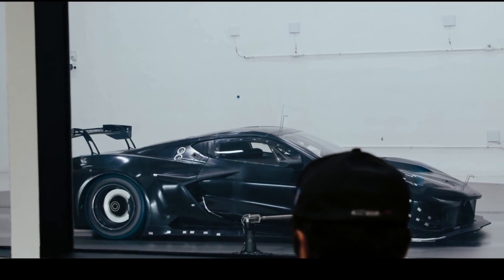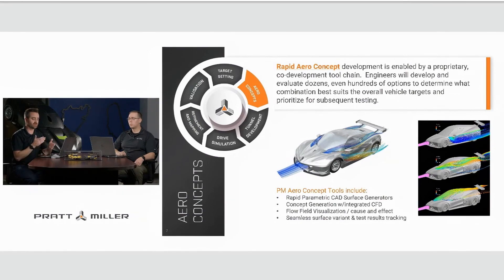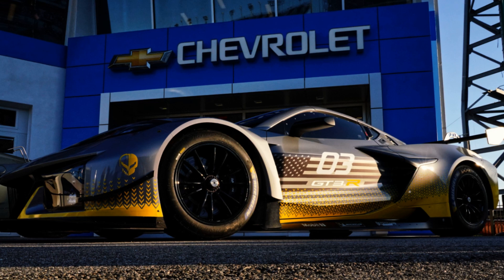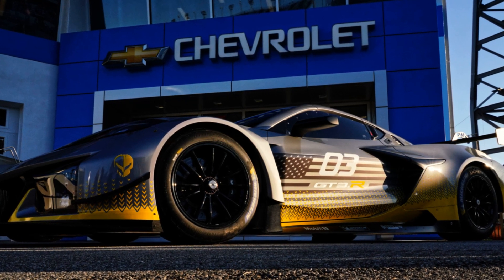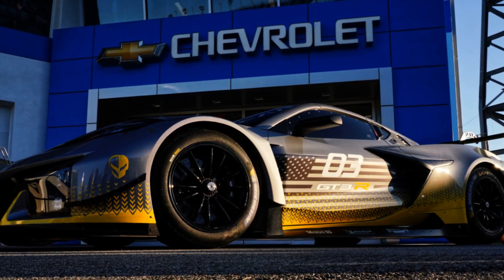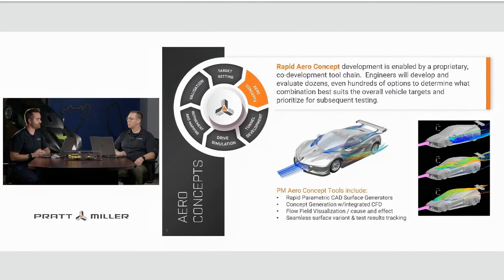We feed our CFD tools with parametric CAD models — we call these aero surface generators. They're parametric so we can quickly adjust the shape and develop many options in a short amount of time. Those generators are linked and traceable throughout our entire process, so if a concept works well in CFD, we can further evolve that generator to make parts for the wind tunnel and test later in the process.